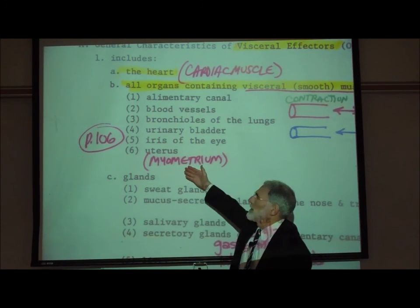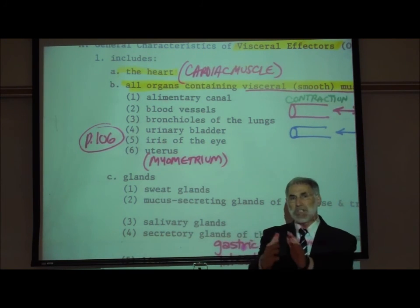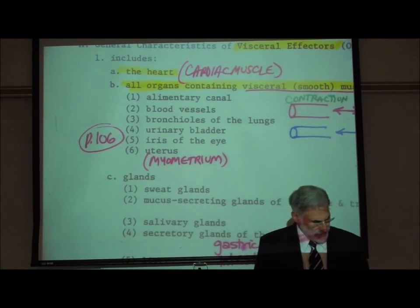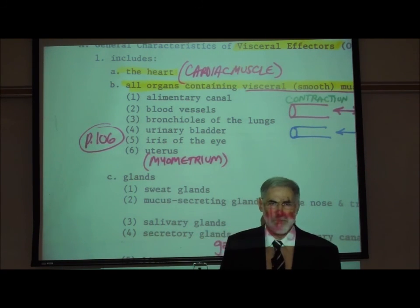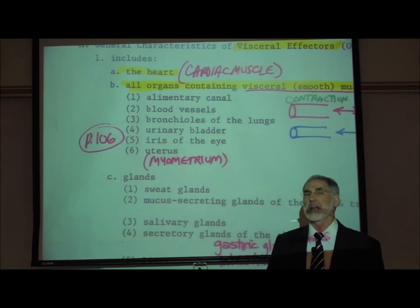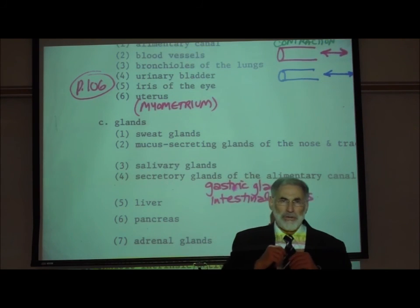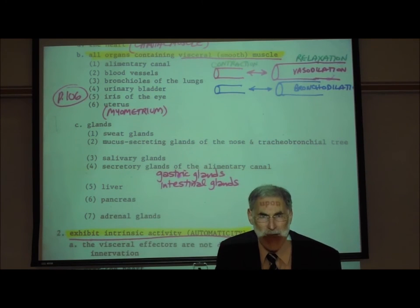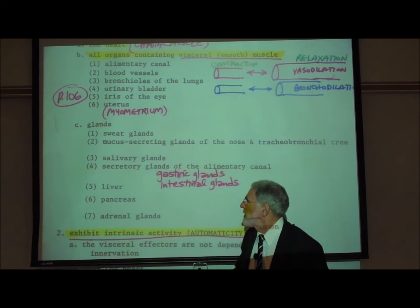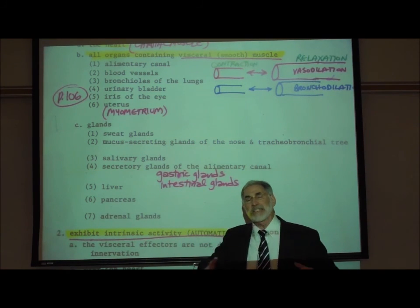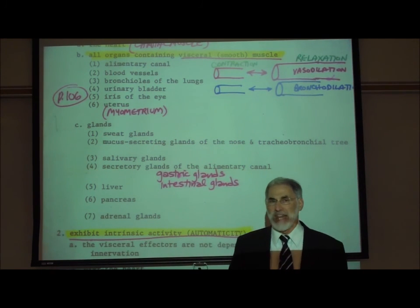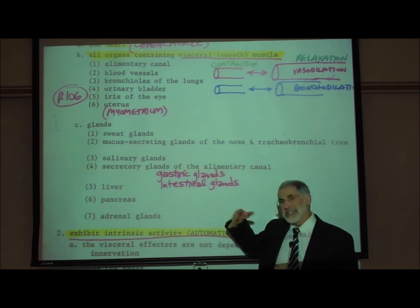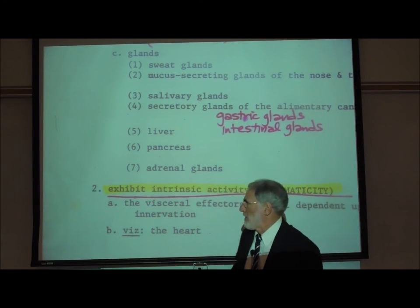Visceral smooth muscle is also found in the myometrium — the muscle of the uterus — which is innervated by autonomic motor neurons. Autonomic motor neurons also innervate glands of the body, including the sweat glands, the mucus-secreting glands of the nose and tracheobronchial tree, and the three sets of salivary glands. Also innervated are the glands in the inside lining of the stomach — the gastric glands that secrete gastric juice — as well as the intestinal glands in the inside lining of the intestine that secrete intestinal juice, rich in digestive enzymes.